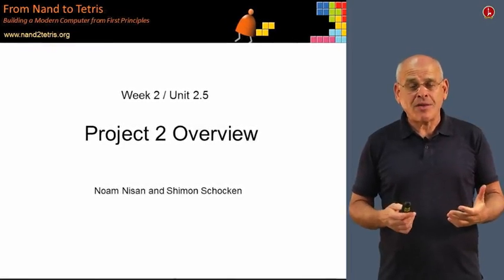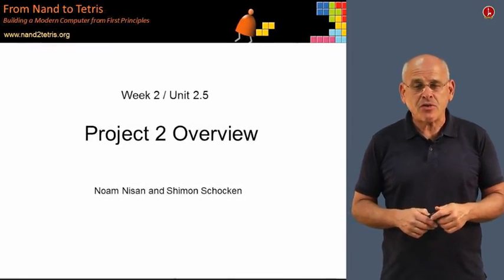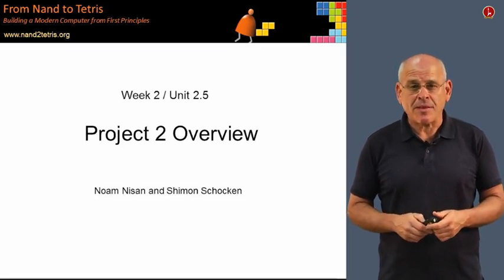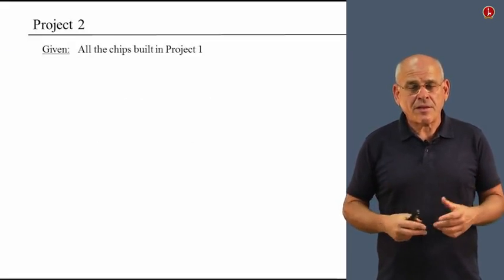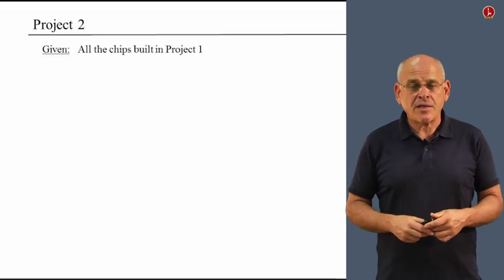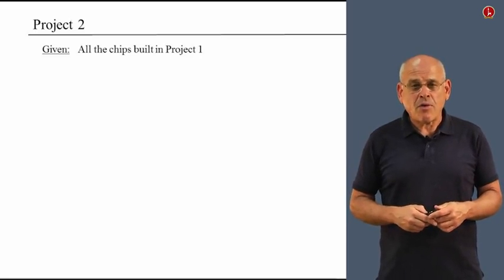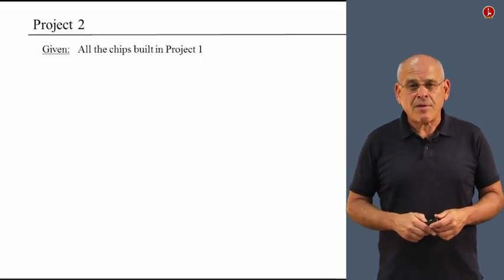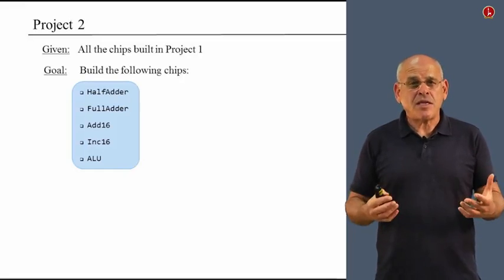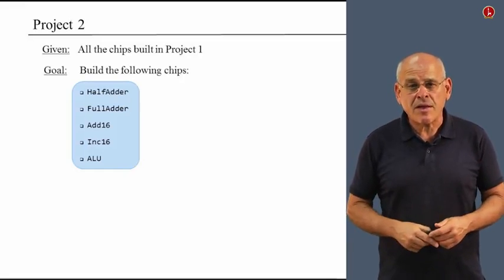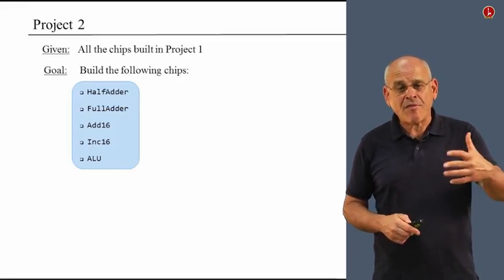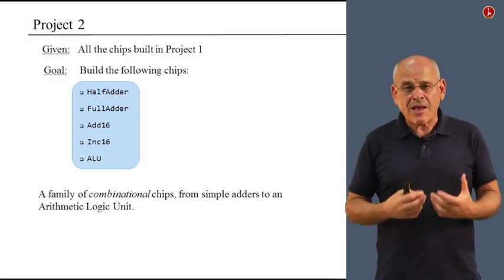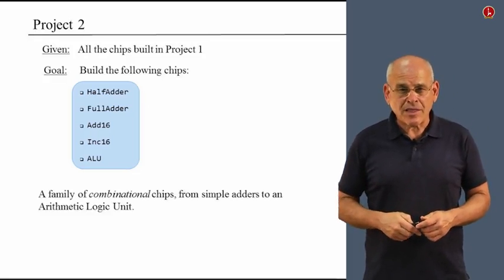In this unit, we're going to describe all the chips that you have to build in project two and give you some guidelines on how to actually implement them. When you set out to build the chips of project two, you can certainly use all the chips that you built in project one — these are the fruits of your hard labor. So you can plug them into your HDL implementations. Using these building blocks, you now have to build the following five chips, ranging from half-adder all the way to ALU — a family of combinational chips from simple adders to more complex ones.